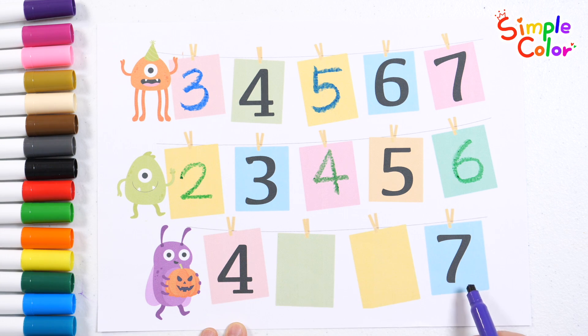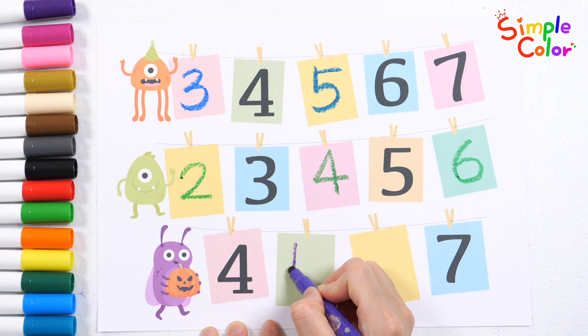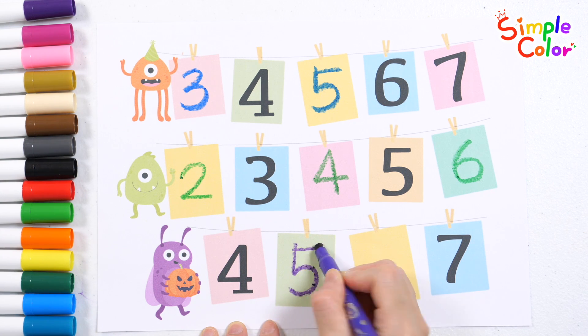Guess the numbers that come between 4 and 7. The answers are 5 and 6.